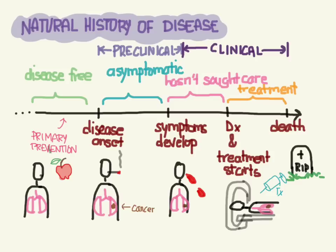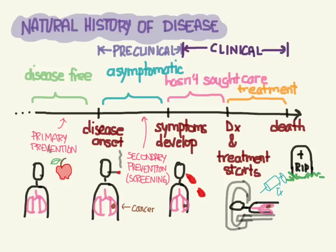Once disease has already started, then we would use secondary prevention, and this is screening. What we want to do is try to move the time of diagnosis earlier, with the hope that with more time we would have more effective treatments so that we could actually improve the outcome. Tertiary prevention treats the various effects of the disease once it's been diagnosed, with the hope that we can perhaps affect a cure or at least improve the outcome in some way.